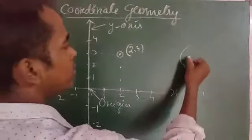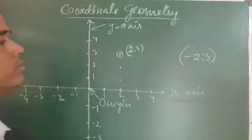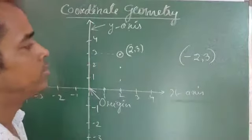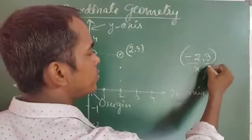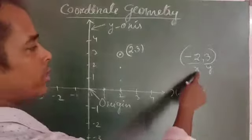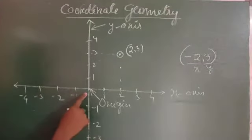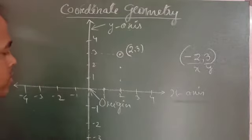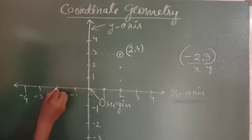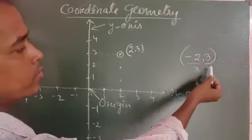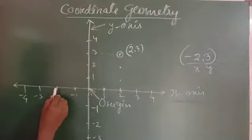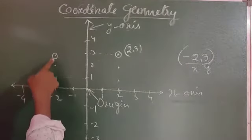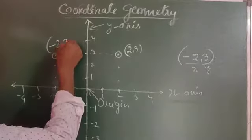Now suppose you have to plot the point (−2, 3). The x-coordinate is −2, so you go towards the left side of the x-axis by two steps: 1, 2. Then for y = 3, you go upward by 3 steps. This is the point (−2, 3).